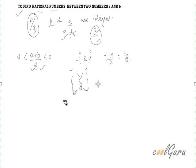Minus 1 and 3 by 2, applying the same formula, it will be minus 1 plus 3 by 2 upon 2. And between 3 by 2 and 4, it will be 3 by 2 plus 4 divided by 2. So this will give 1 by 4 and this will be 11 by 4.